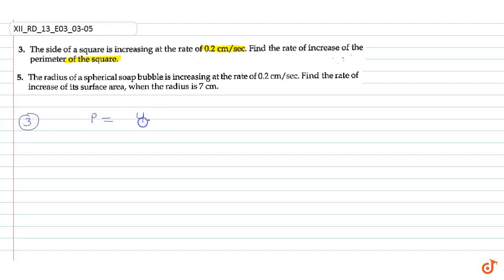For the third question, we know perimeter P is equal to 4 times the side of the square, so P = 4a. Now we have to find dP/dt. We know dP/dt is equal to dP/da into da/dt. dP/da is equal to 4, and da/dt value is 0.2 centimeters per second. So dP/dt at this point is 0.8 centimeters per second.